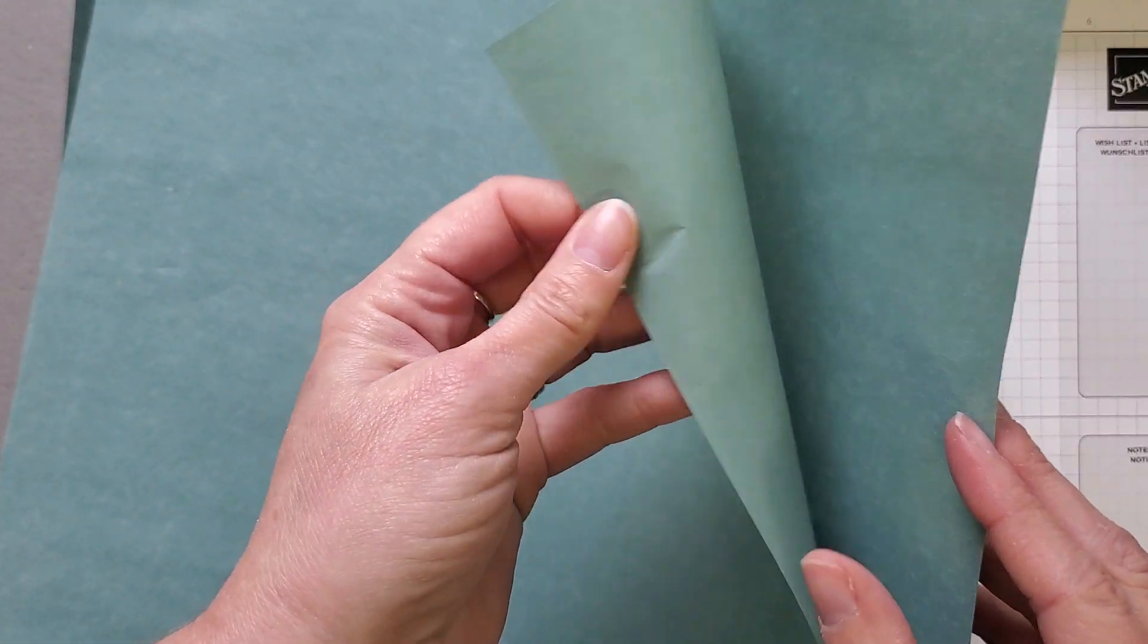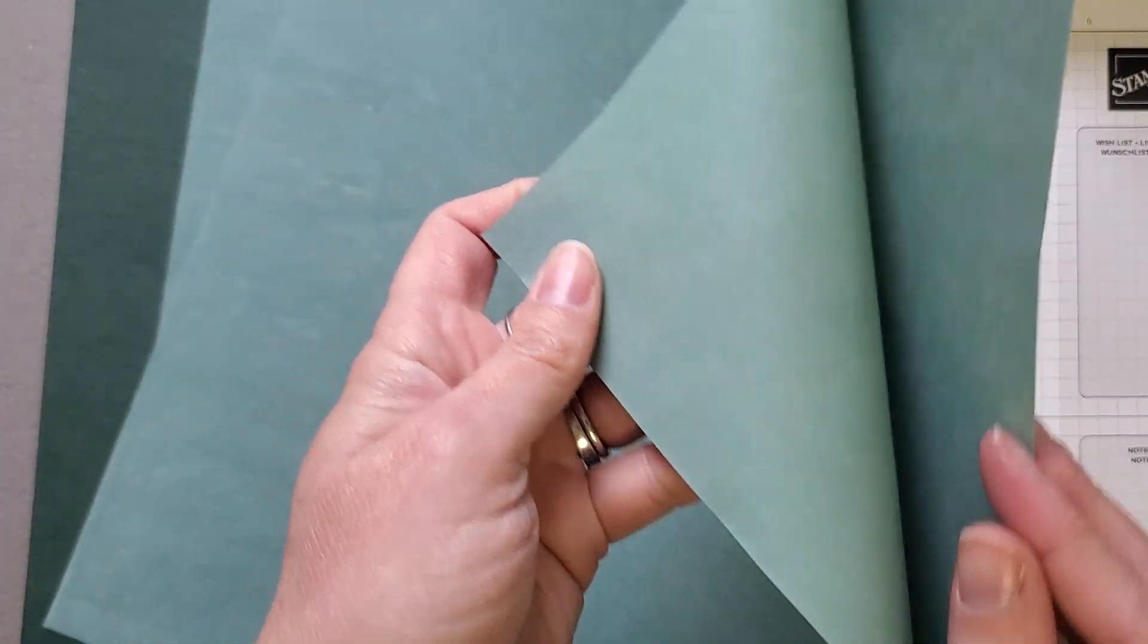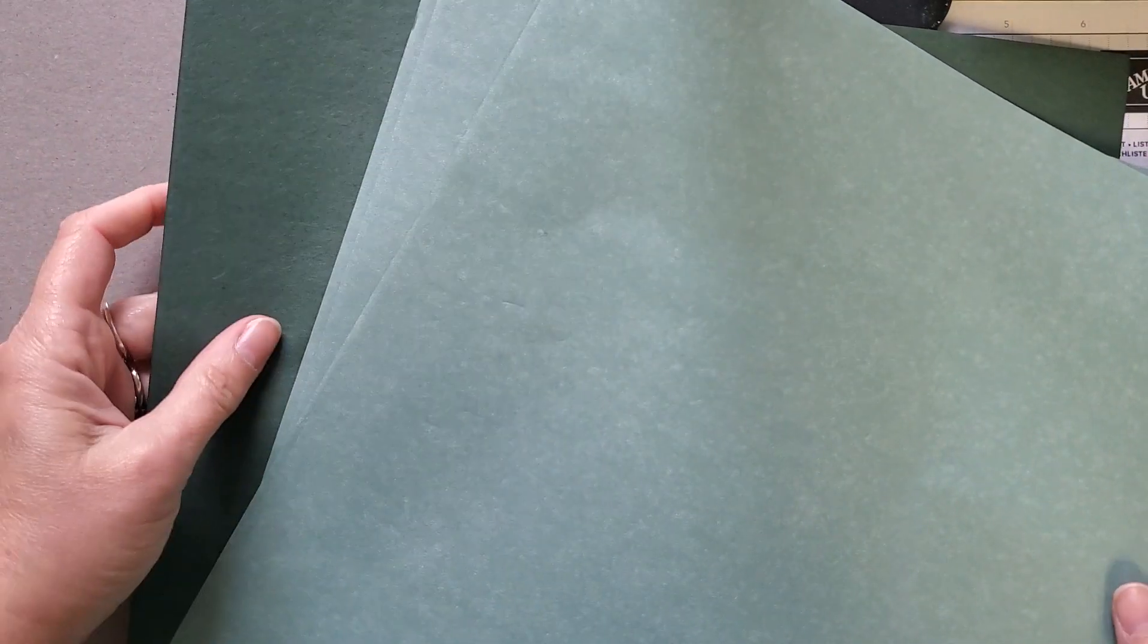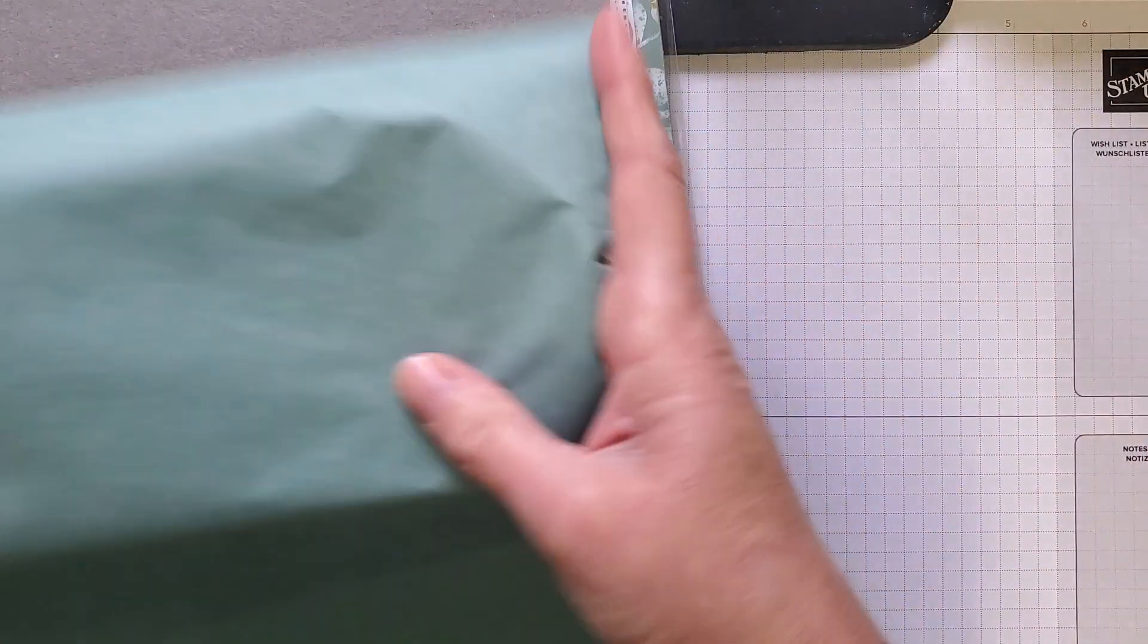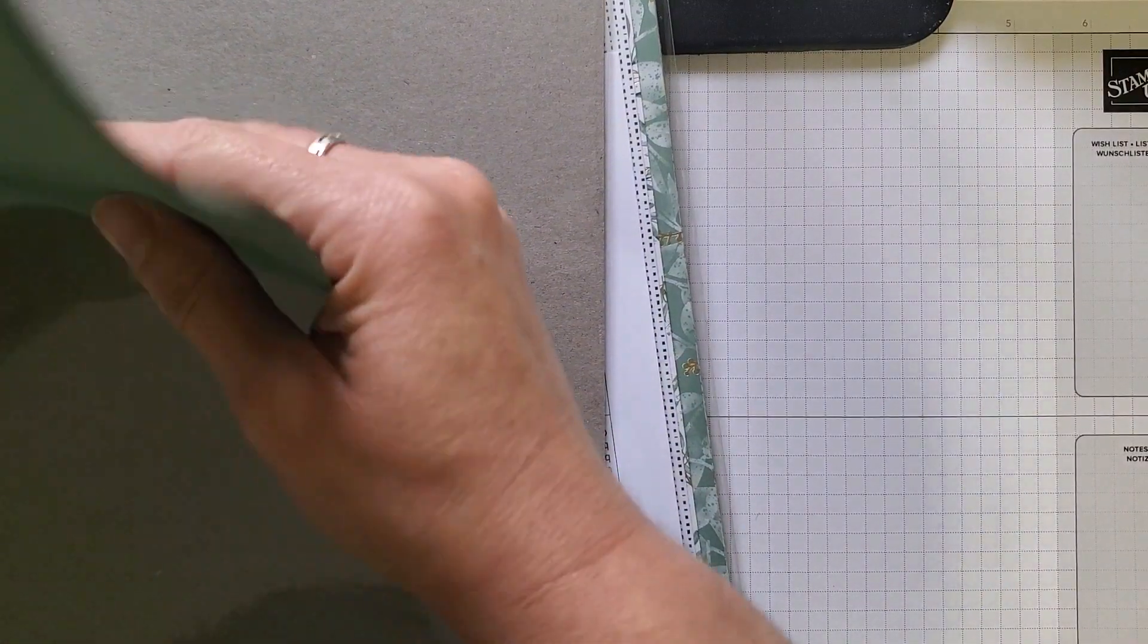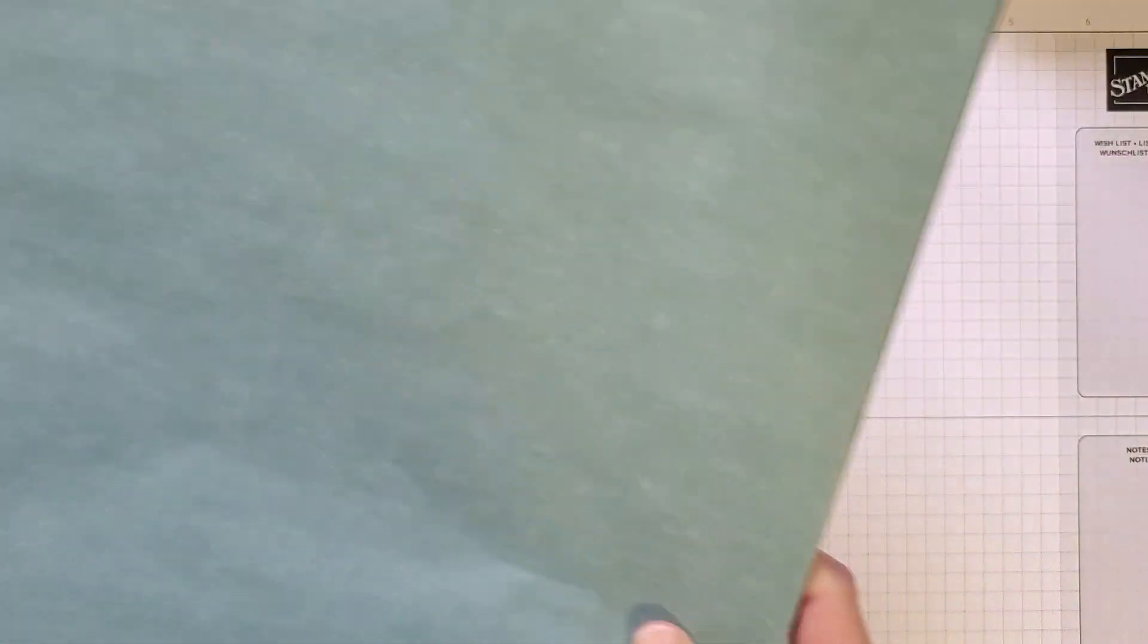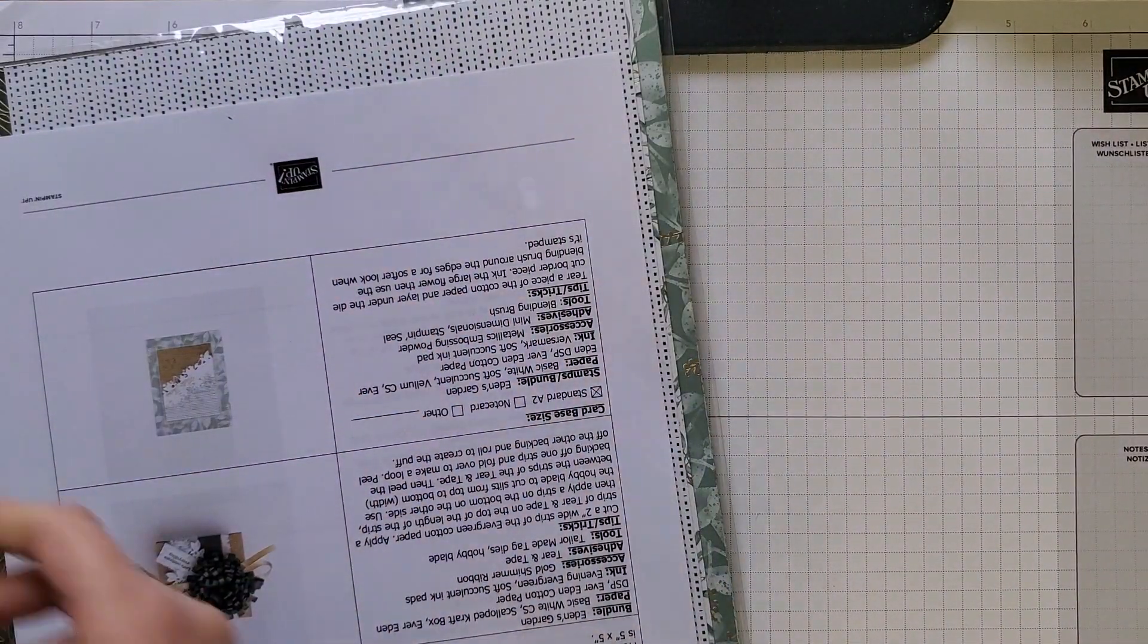So this is actual cotton paper. It feels kind of like tissue paper, but it's got a shiny side and then a flatter side. And it comes in the two colors, the soft succulent and the evening evergreen. This would be really fun for punching. It would be great for die cutting. Tearing, this would be really fun if you like to tear things and give that texture.